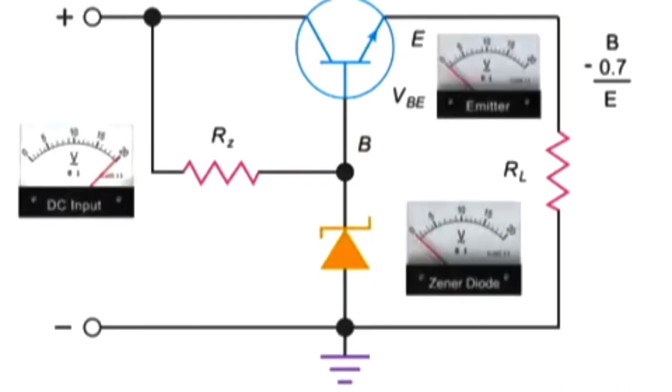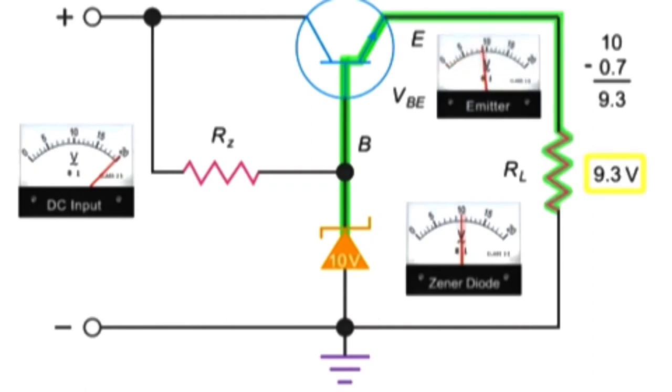Thus, if we change the Zener diode value to 10, then the voltage at the transistor base is 10 volts. After passing through the transistor, the voltage drops to 9.3 volts, resulting in a 9.3 volt load at the RL resistor.